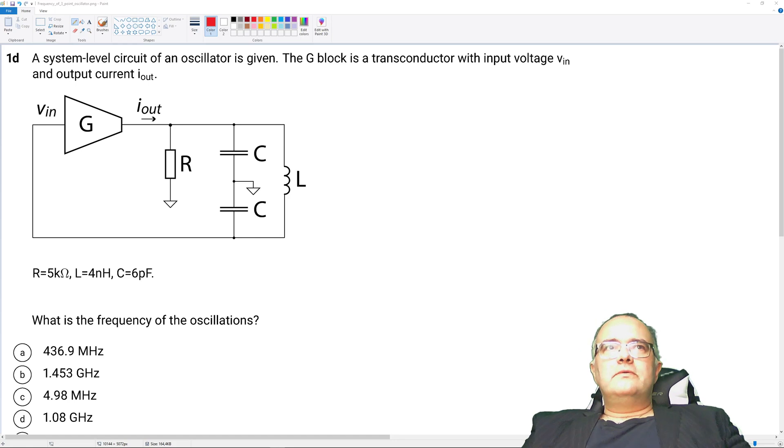Hello, my name is Giorgio Rodolf and here we have this problem. A system level circuit of an oscillator is given. Now what we see is a three-point oscillator. The G-block is a transconductor with input voltage V_in and output current I_out. So this is a transconductor, input is voltage and output is current.